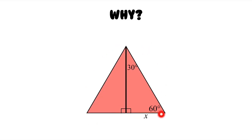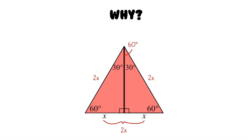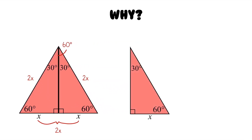Since the duplicate triangle is exactly the same, it shares all the same characteristics: this angle is also 30 degrees, and this angle is also 60 degrees, and this side is also x. Now, looking at this as one big triangle, the bottom side is x plus x, which is 2x, and the top angle is 30 plus 30, which is 60 degrees. We now have three 60 degree angles, making this an equilateral triangle, so all sides are equal — this side is 2x, this side is 2x, and this side is 2x. Going back to our original 30-60-90 right triangle, this means the hypotenuse is 2x.